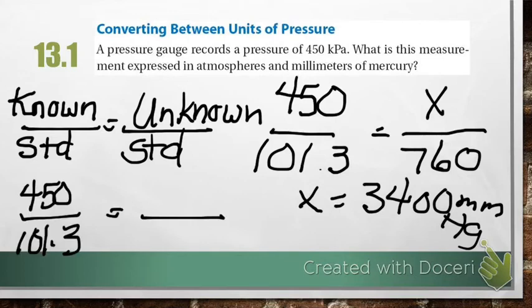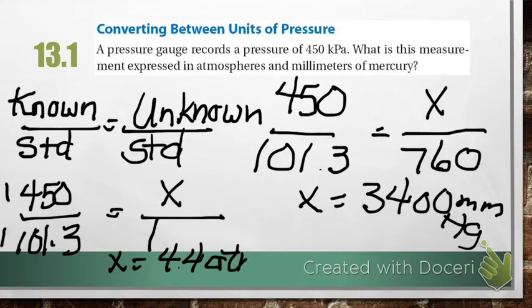Now let's convert the same thing to atmospheres. We started over here, 450 kPa's. That standard is 101.3. We want to go to atmospheres. That's our unknown. Our standard for atmospheres is 1, 1 atm. We solve for X. X equals 4.4 atmospheres. So, that tells us that 450 kilopascals is the same as 4.4 atmospheres.